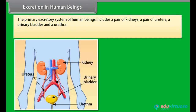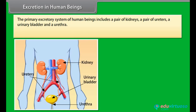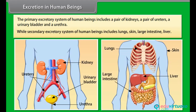The primary excretory system of human beings includes a pair of kidneys, a pair of ureters, a urinary bladder, and a urethra. While the secondary excretory system of human beings includes lungs, skin, large intestine, and liver.